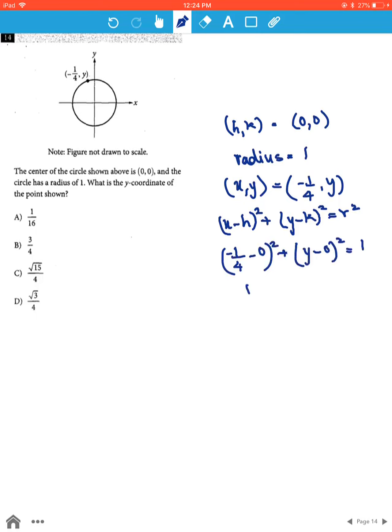Therefore 1 over 16 plus y square is equal to 1. Therefore y square is equal to 1 minus 1 over 16. Therefore taking the LCM we'll get 16 minus 1 over 16 which is equal to 15 over 16.